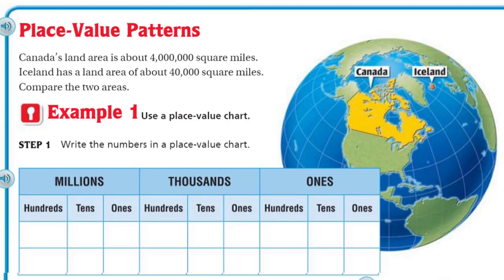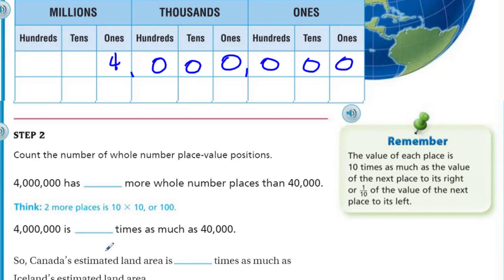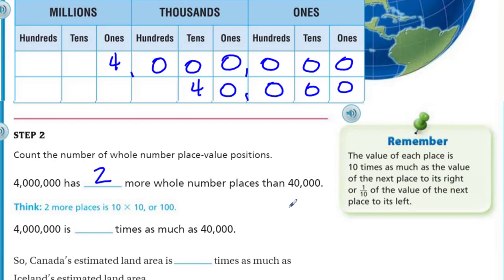Example one says use a place value chart — write the numbers in a place value chart. The first number was four million, so I put the four in the millions column. Because there aren't any other digits mentioned, just four million, I put zeros in all those places. The land area for Iceland was forty thousand — I put the four in the ten thousands place, then zeros in remaining places.